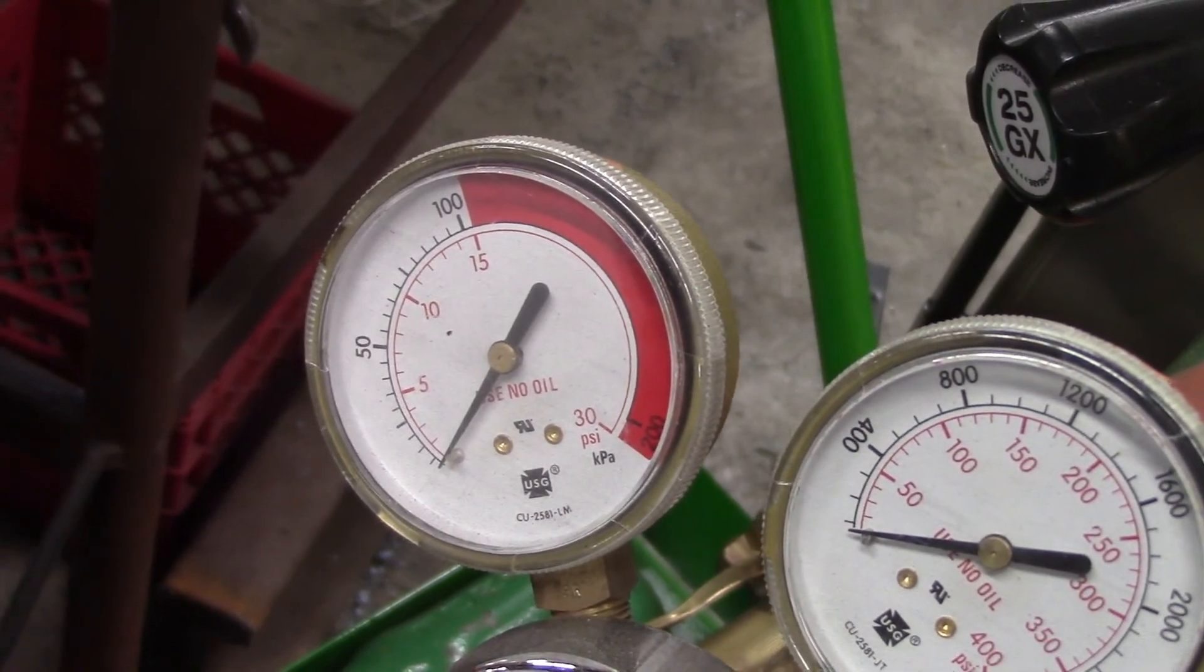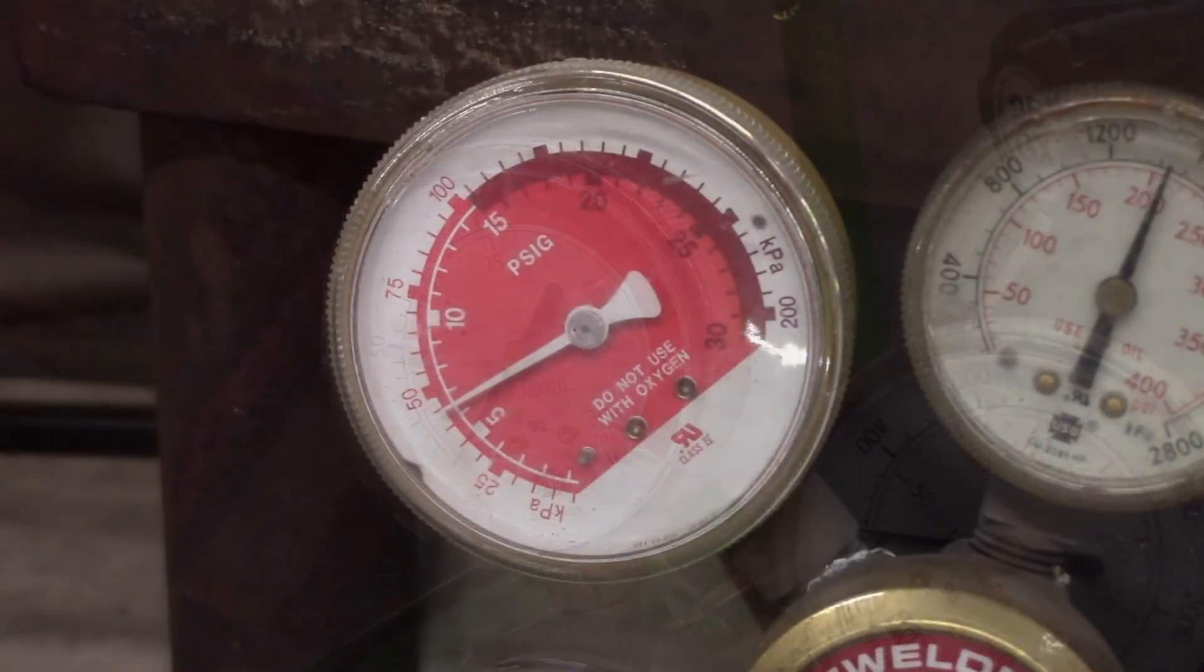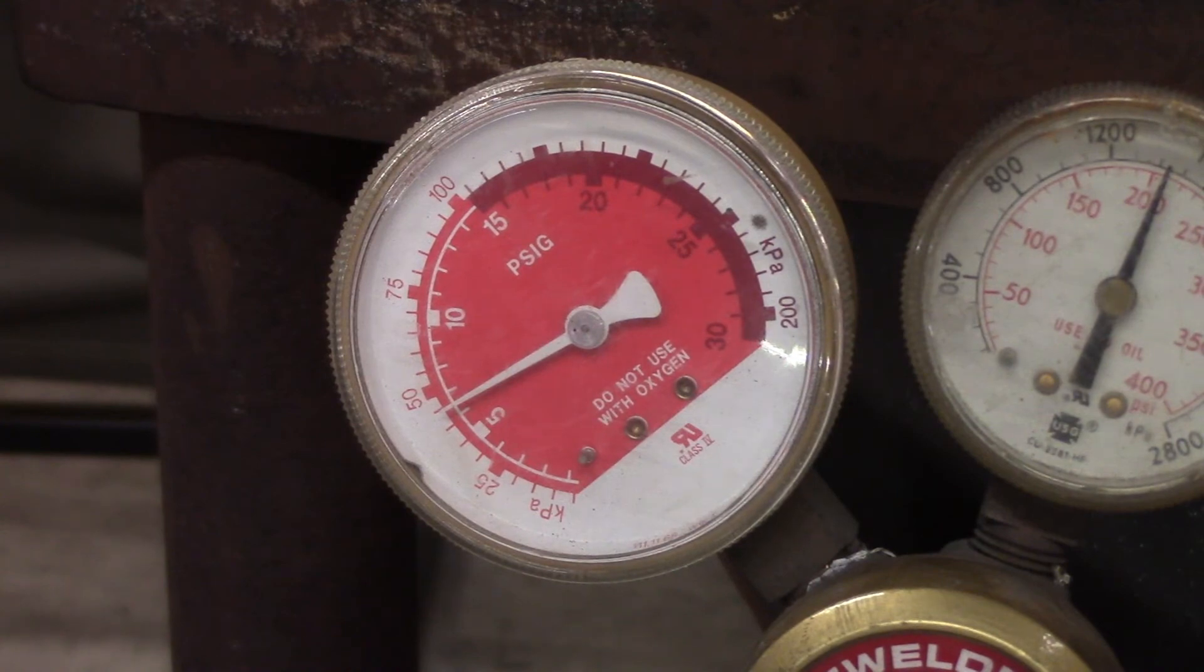Found one other type. We'll take a look at that now. This is the other style gauge that you can get on an acetylene regulator. It's just red all over the place and then it gets really dark red at 15. I like the other one better that's white and then red because it stands out more.